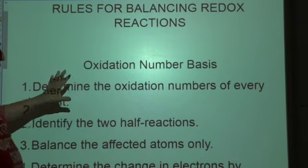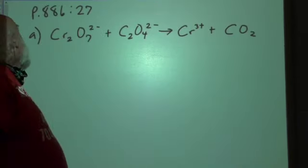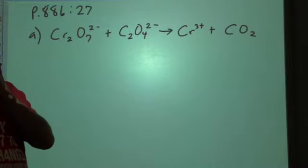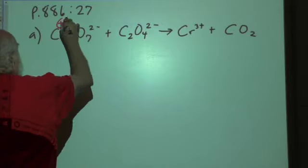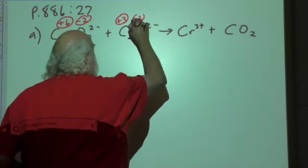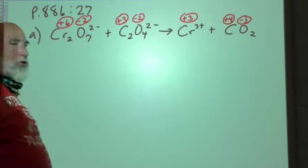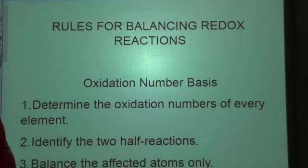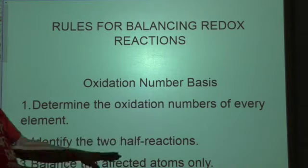We're going to come back to these rules when we do the balancing of an acidic or basic solution. On page 886, we already did this with the oxidation numbers — if you don't remember, go back and check. The oxidation numbers are: positive six, negative two, positive three, negative two, positive three, positive four, and negative two. That means we've effectively completed step one: determine the oxidation numbers of every element.